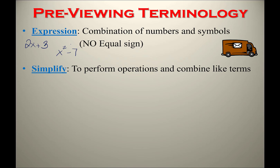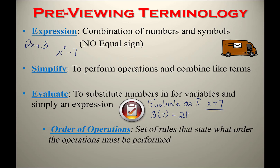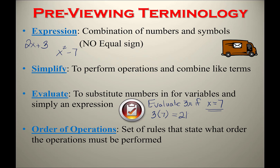To simplify means to perform the math — add, subtract, multiply, divide, powers, exponents, roots — and combine like terms as much as possible. To evaluate means you substitute a number into the variable and then simplify. For example, evaluate 3x if x equals 7: substitute 7 in for x, then multiply to get 21.